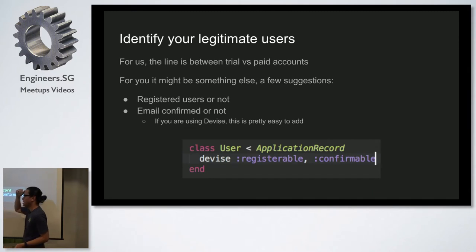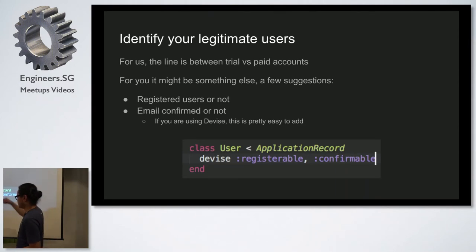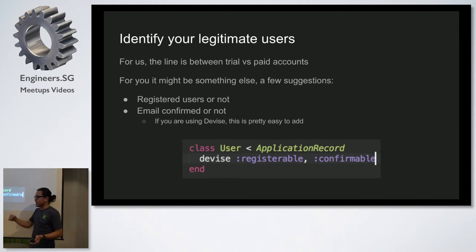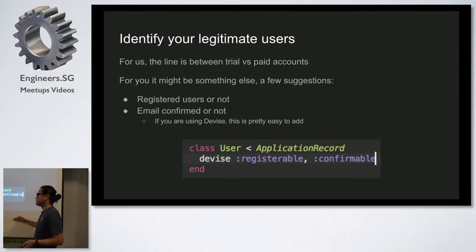For us the line is between trial and paid accounts, but for your app it might be something else — whether your user is registered or not, or whether they've confirmed their email. In Devise, that's pretty easy: you have Devise registerable or confirmable. The idea is you should not treat customers the same if you cannot verify them. Because if you have many registrations in a day, some of them might not be legitimate users, and you need to make sure non-legitimate users are not abusing your resources.